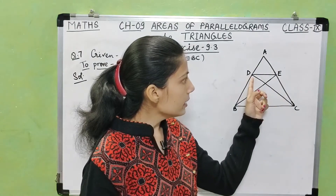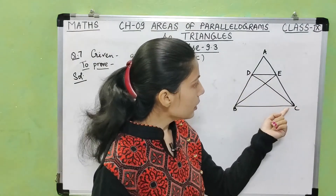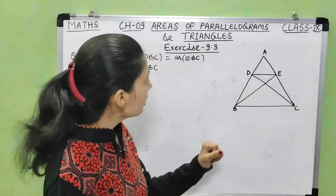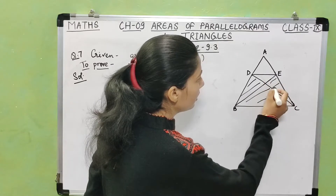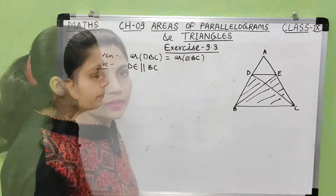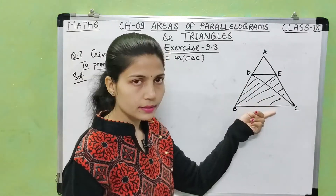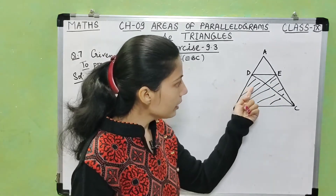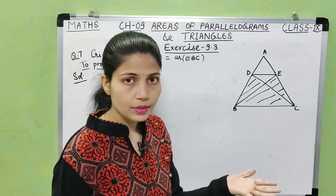In this question, ABC is a triangle with D on side AB and E on side AC. We join D to E, B to E, and D to C. We are given that area of triangle DBC equals area of triangle EBC — both triangles have equal area. They share the same base BC, so DE is parallel to BC.